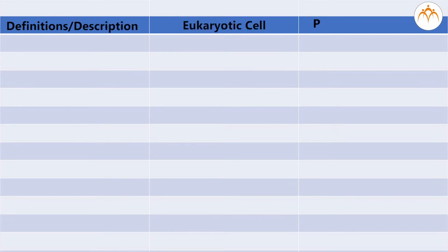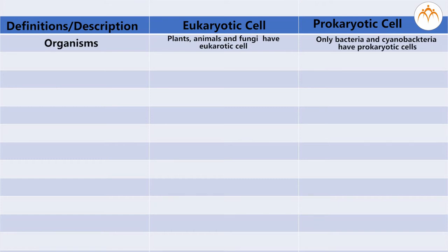Definitions, description, eukaryotic cells, prokaryotic cells. Organisms: Plants, animals and fungi have eukaryotic cells. Only bacteria and cyanobacteria have prokaryotic cells.